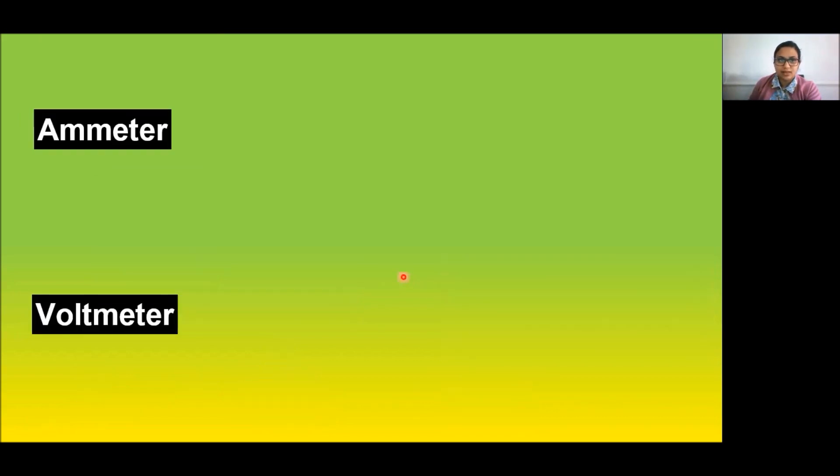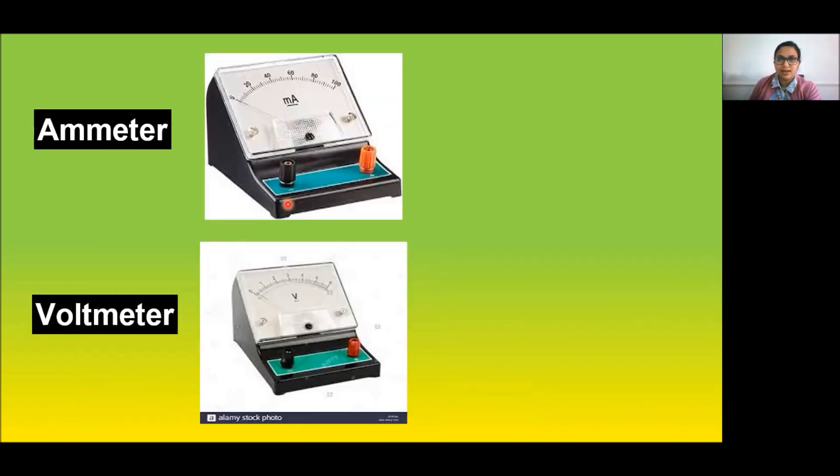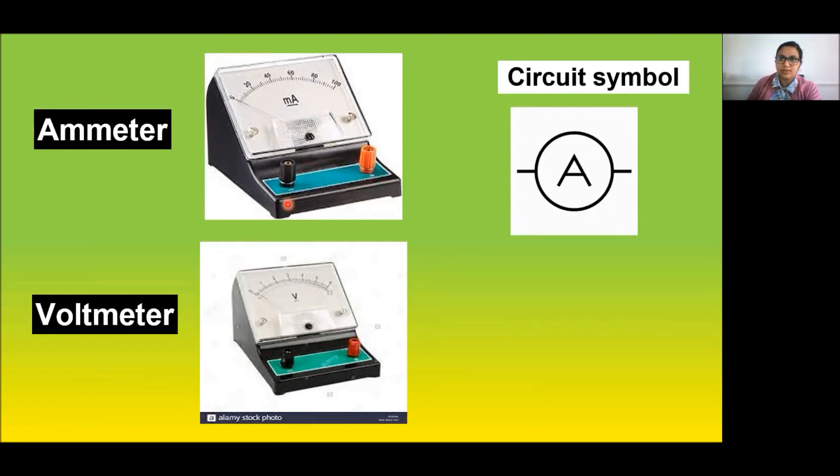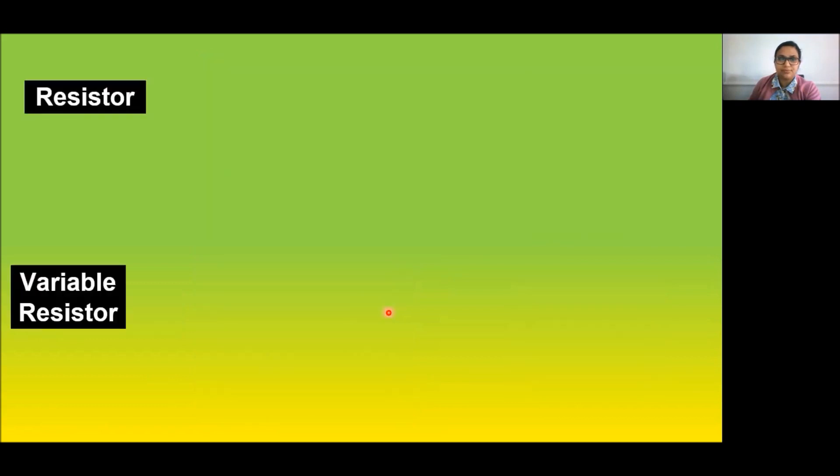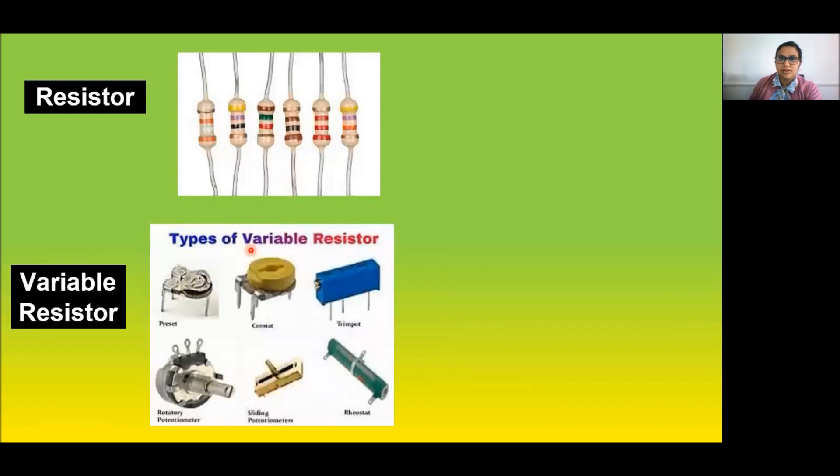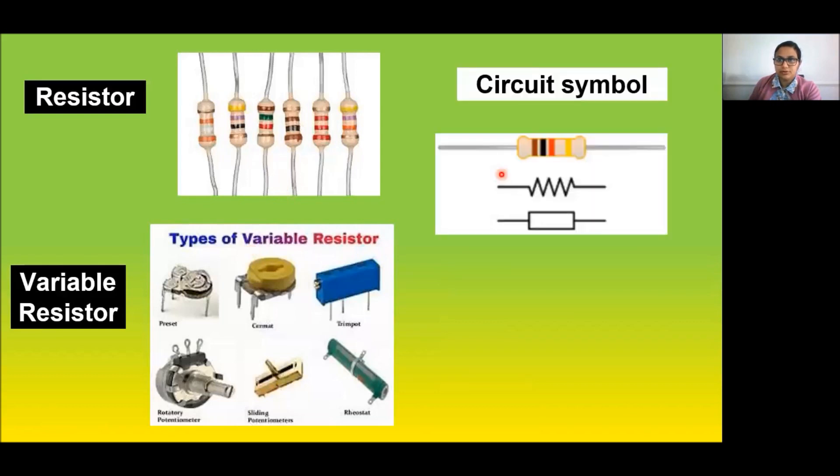Next is ammeter and voltmeter, represented by A for ammeter and V for voltmeter. Next is resistor. The circuit symbol for resistor is shown here, and the circuit symbol for variable resistor is shown here.